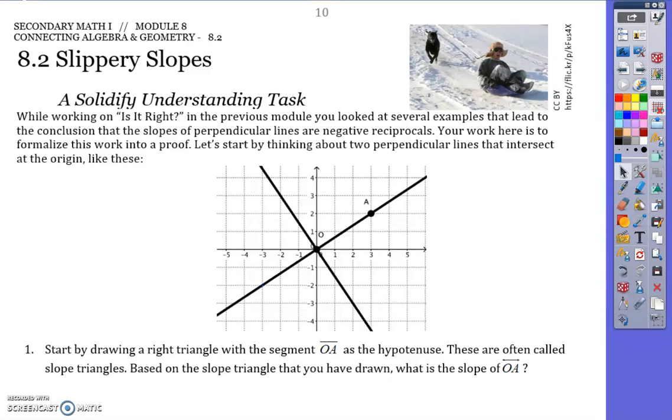In the previous module, we looked at several examples that lead to the conclusion that slopes of perpendicular lines are negative reciprocals. So what does that mean?